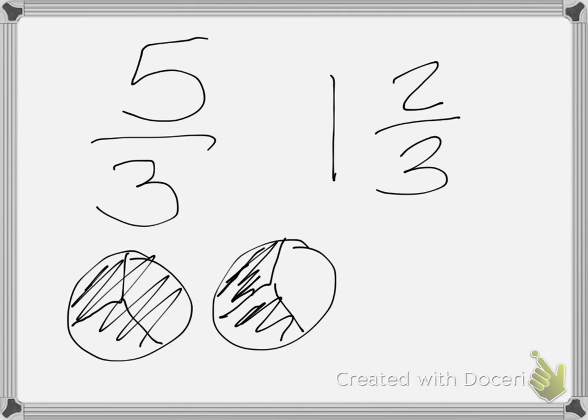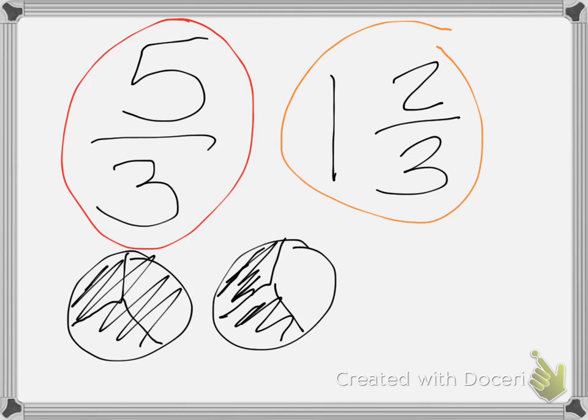My improper fraction, I'm circling in red, improper fraction. The numerator is larger than the denominator, and then a mixed number has a whole number, our whole number, yay! And a fraction.